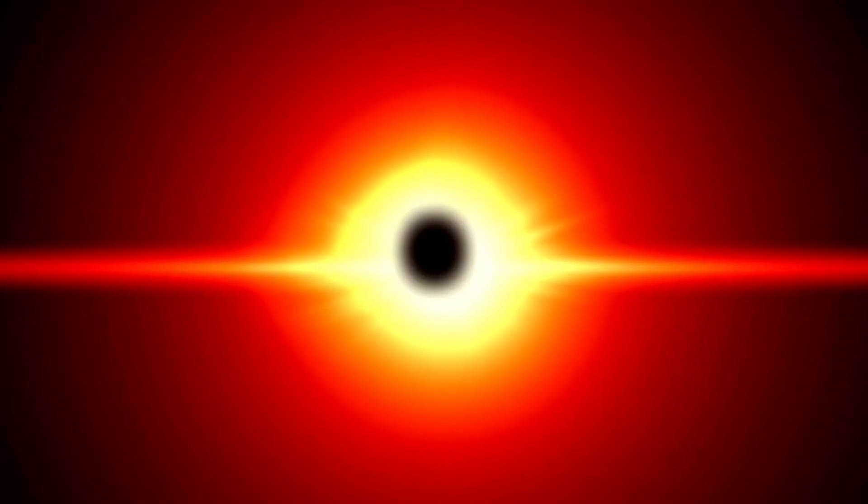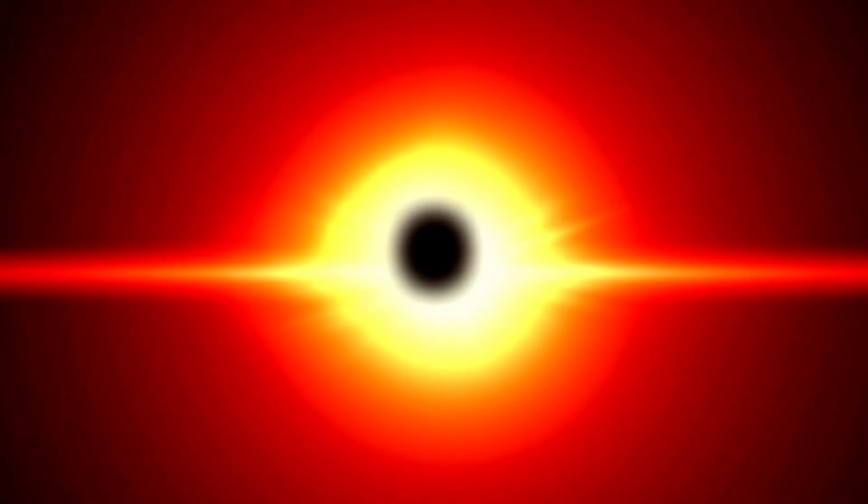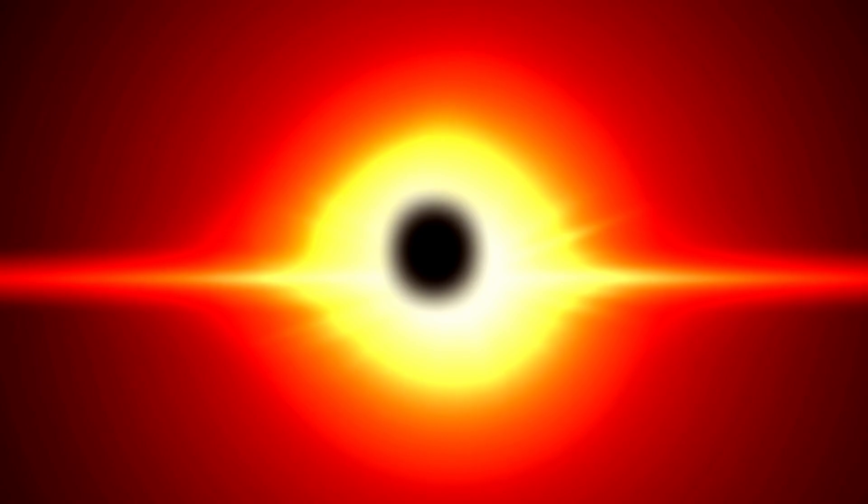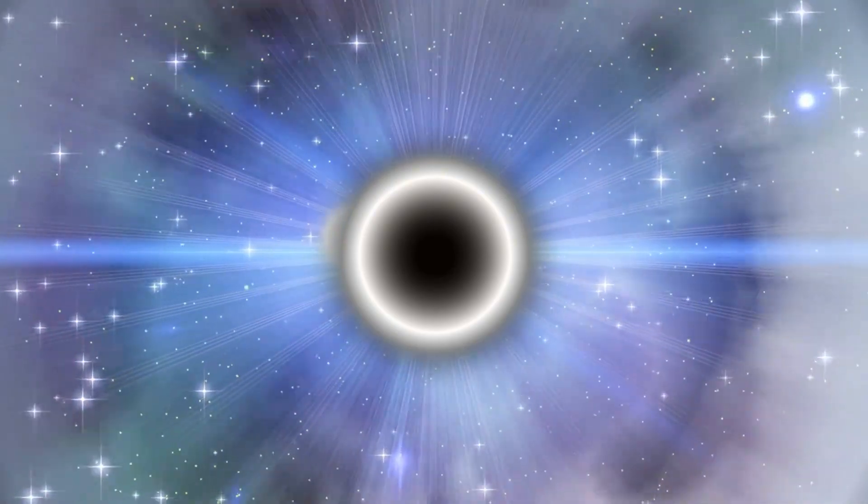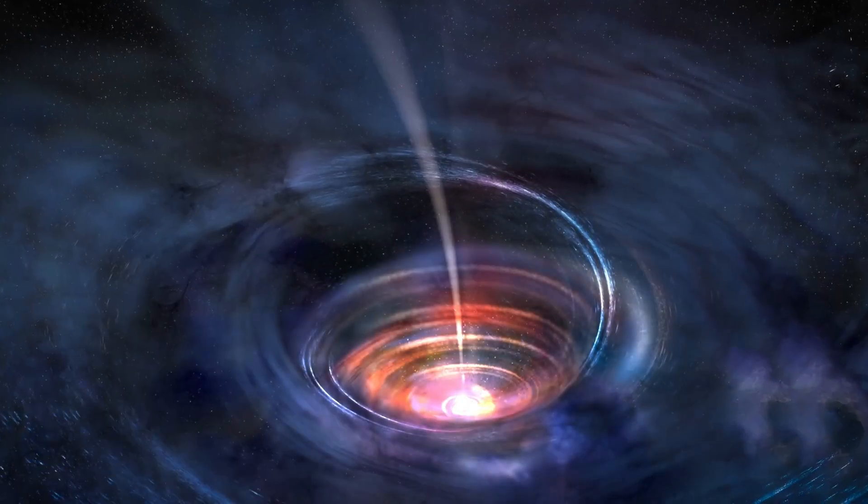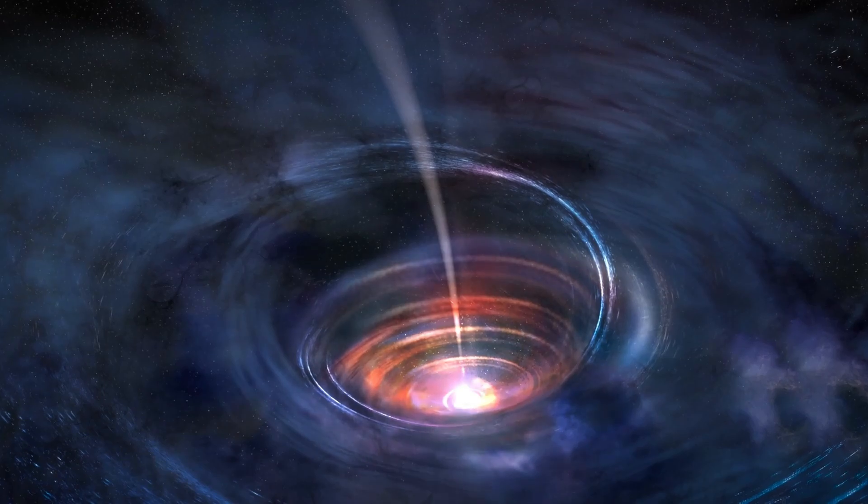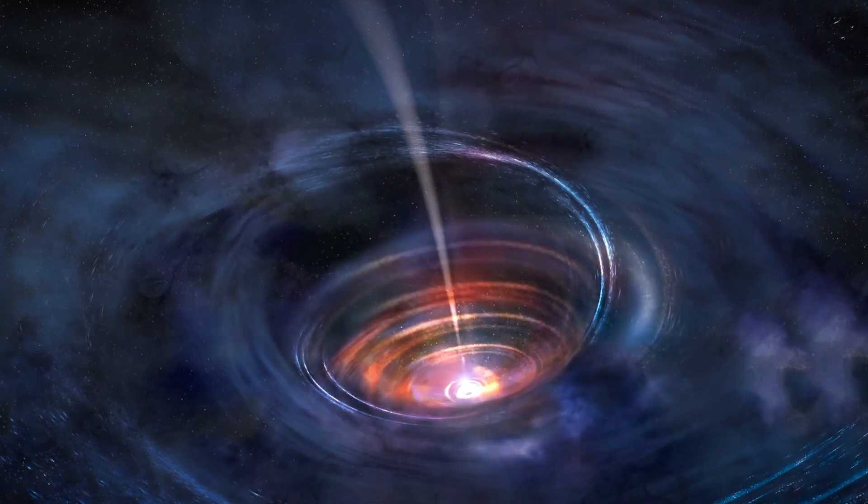On the opposite end of the spectrum, some scientists even question whether black holes exist at all. For example, Tokyo-based scientist Enrio Raldi and his team have proposed a theory suggesting that black holes might be nothing more than holograms, illusionary constructs of our limited understanding of the universe. This idea posits that what we perceive as black holes could be visual discrepancies or illusions, much like the way a hologram works. In a universe as vast and mysterious as ours, such possibilities cannot be entirely ruled out.